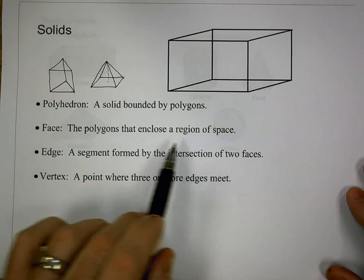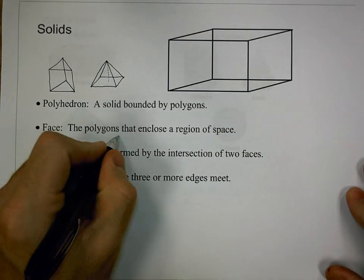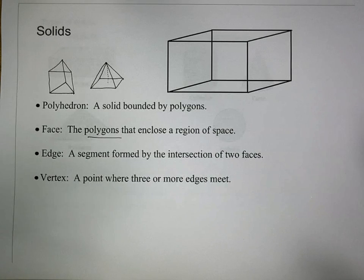So, of those polyhedrons, we have some parts. We have the face, and that's the polygons that enclose the region of the space. Those are the polygons, those are the walls, those are the sides, those are the pieces that make the object.